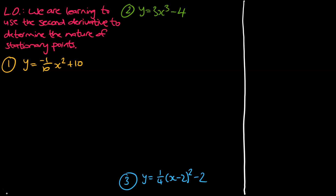Hey guys, Mr. Bowman here. Our learning objective is in pink. We're learning to use the second derivative to determine the nature of stationary points. So if you watched the previous video, we figured out the nature of stationary points without the second derivative. I'm going to show us another method — how can we use the second derivative to determine the nature of stationary points?